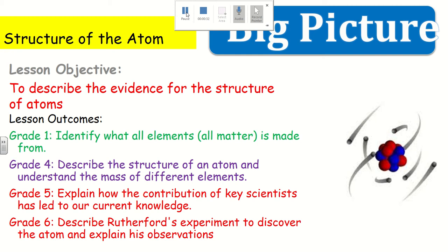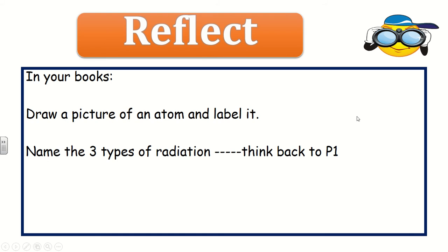Lesson objective: describe the evidence for the structure of the atom. Please feel free to stop these slides at any point if you need to read through them more carefully or take notes. Your first task is to draw a picture of an atom in your book and label it, and secondly name three types of radiation — think back to P1 from Year 9.